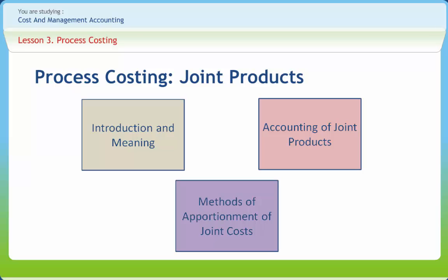Under the contribution or gross margin method, the marginal cost of joint products is apportioned on the basis of weight or quantity of the product. Fixed cost is normally apportioned on the basis of marginal contribution of the products. This method is most useful for managerial decisions in maximizing the profit of the business organization through the identification of the right product mix.